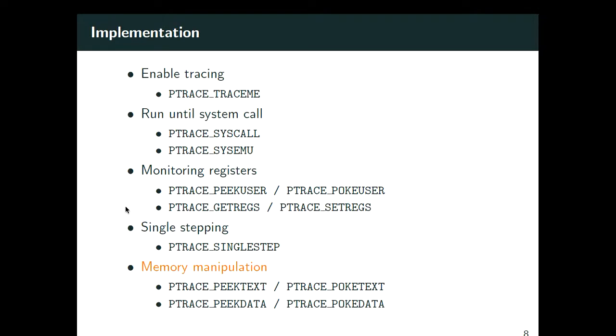Question: are the debug registers visible to the user program itself, or only available via ptrace? They are a protected resource — only the kernel can modify them. The reason is you could put any address in them, including a kernel address, which isn't ideal. The only way to modify those debug registers is via PEEKUSER/POKEUSER, and the kernel does sanity checking to verify you're allowed. If not, you're killed; if so, everything is fine.